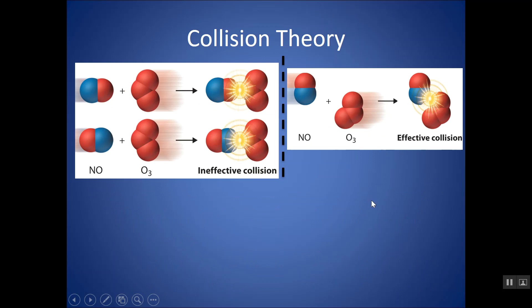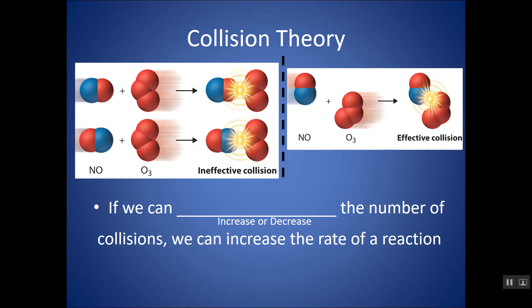So if a collision does not meet these requirements, particles may collide but no reaction actually occurs. Really only a fraction of collisions are effective collisions. Any way we can increase the number of collisions and also increase the number of effective collisions, we can increase the rate of reaction.